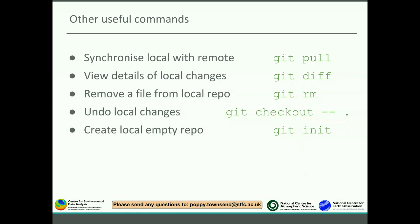Sometimes you might want to remove a file from a local repository, and that is accomplished using git rm. Another useful thing: if you tried something out and decided it wasn't working and you wanted to go in a different direction — you essentially want to undo everything you've done — you can type git checkout dash dash dot. That essentially means go back to the previous save point and reset everything.